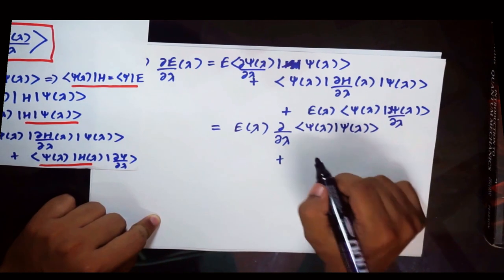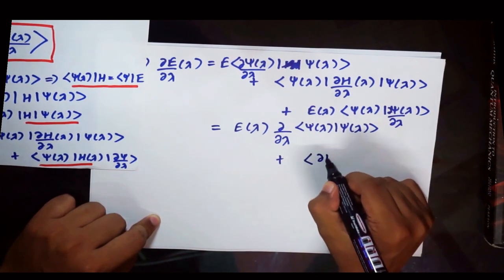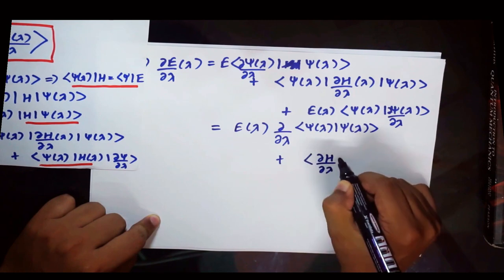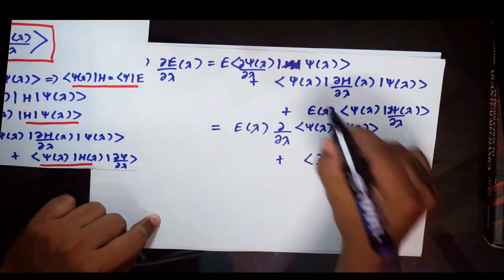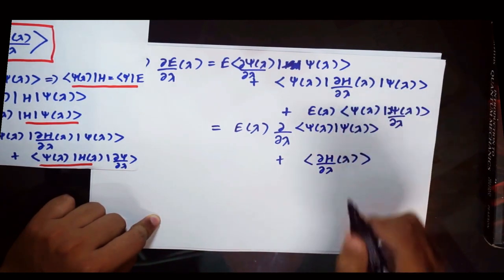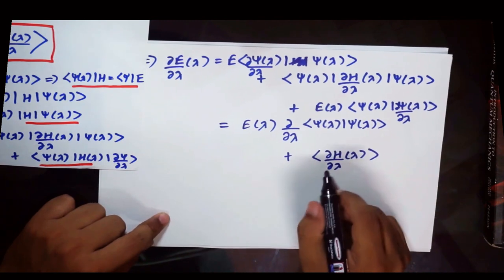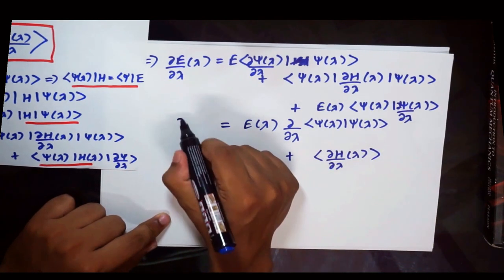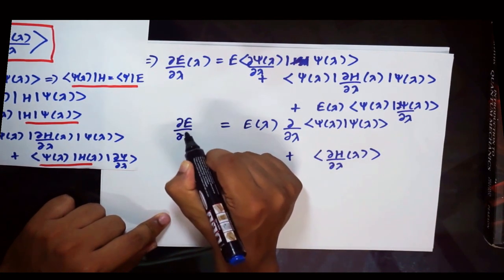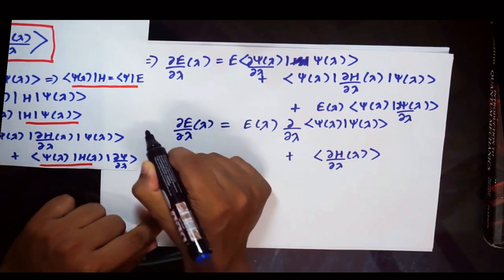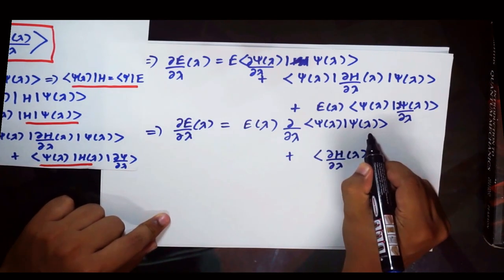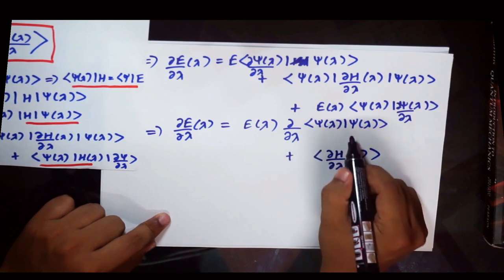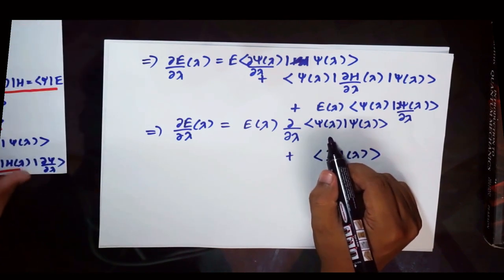Then use the shorthand notation and write it like del H by del lambda. As you can notice here, it is basically the expectation value of the del H by del lambda term. So now since I have already mentioned that the wave functions or the eigenwave functions of the Hamiltonian are normalized, therefore this term would equal to 1 and the derivative of 1 would be 0 since it is constant.